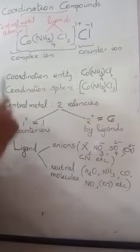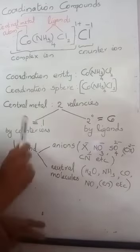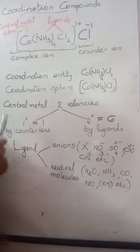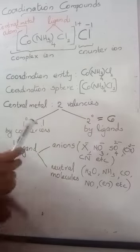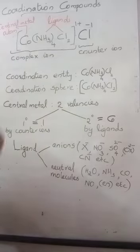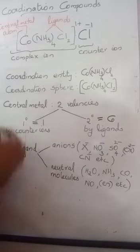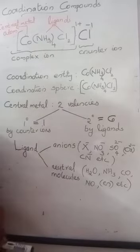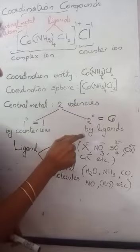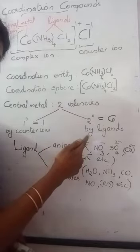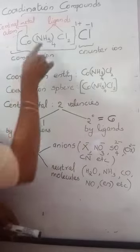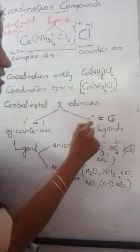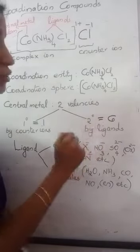In a coordination compound, the central metal atom possesses two valencies: primary valency and secondary valency. Primary valency is satisfied by the counter ion — here, the primary valency of cobalt is satisfied by one chloride ion, so the primary valency is one. Secondary valency is satisfied by the ligands — here there are four ammonia molecules and two chloride ions, making six. So the secondary valency of cobalt in this complex is six.